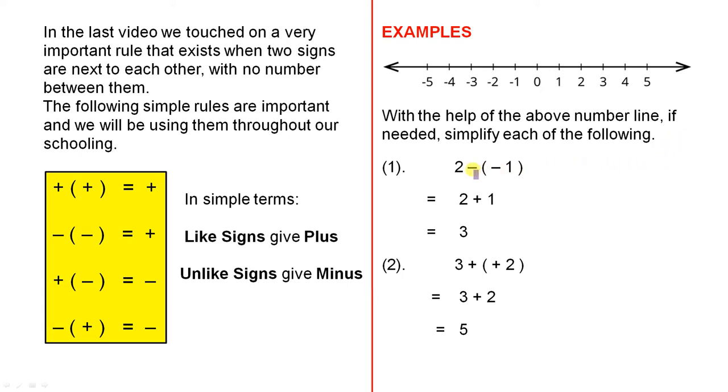Number one. So we have 2 minus minus 1. We saw here that when you have two minuses, that translates to a plus. So that's actually 2 plus 1, and that's 3. So you can do that in your head. Or if you want to practice doing the number line, you look at the first number and you start on the 2, and you move one step to the right.